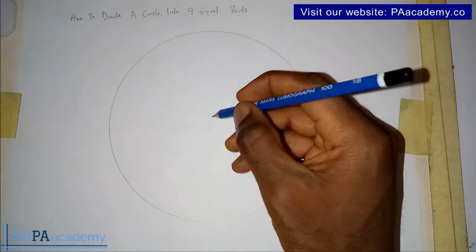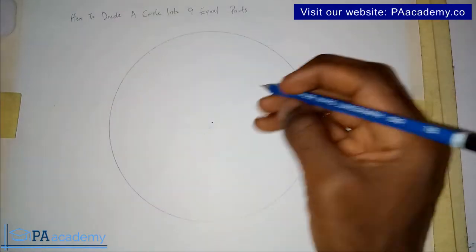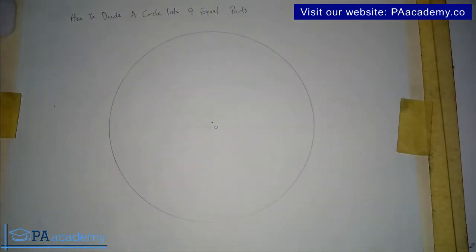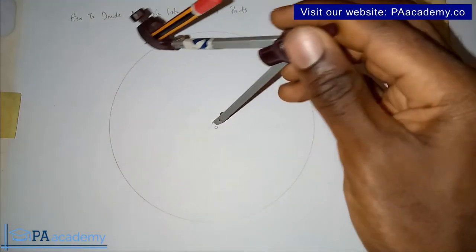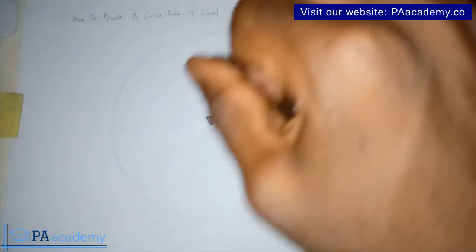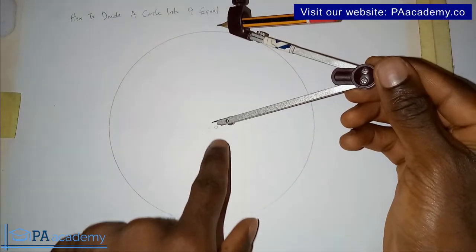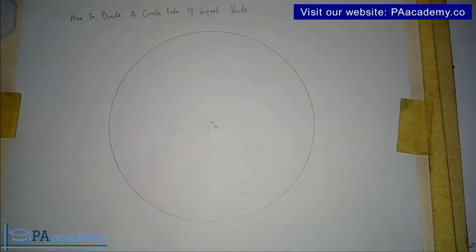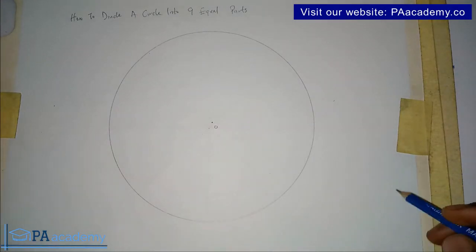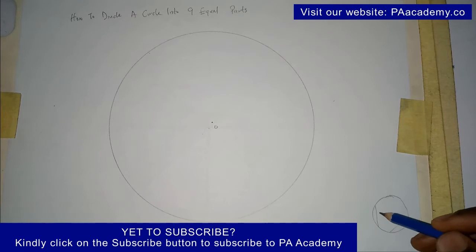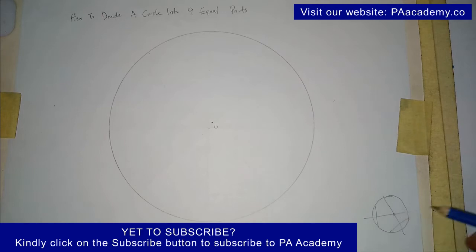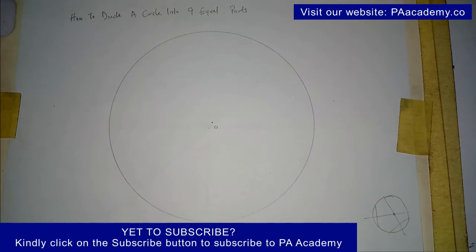Once you have your circle, one thing you have to note is the center of your circle — let's call this point O. If you used a compass to draw your circle, it should be easy to locate the center. If you are using a round object, you may need to apply the principle of finding the center of a circle when the center is not given, where you draw a perpendicular line to find the center. I've done a video on this — check the technical and engineering drawing playlist.